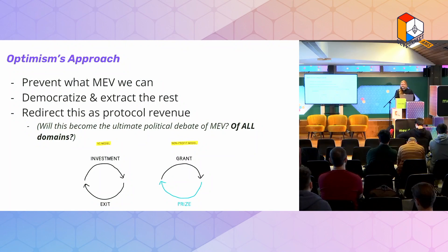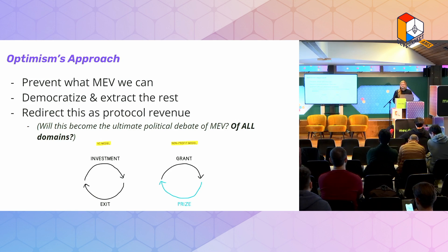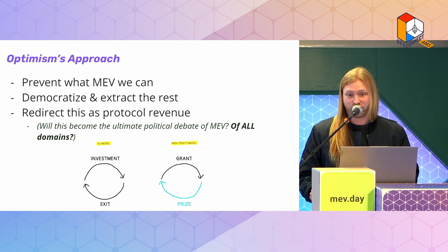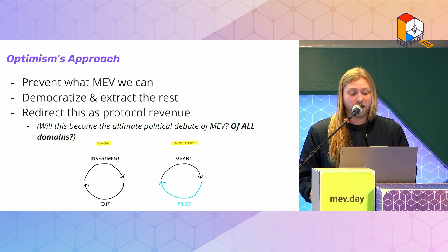Let me talk about how Optimism looks at MEV and what we want to do about it. The first thing we need to do is prevent what MEV we can. What that means is a little tricky, but there are definitely heuristics for bad types of MEV that we can get around and should do so. Ed talked about an approach on that which I'll touch on later, and there are others as well.